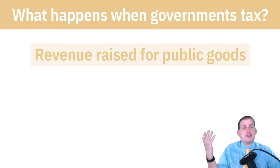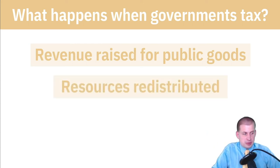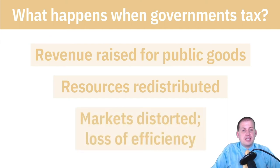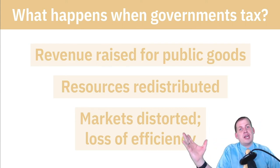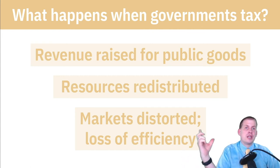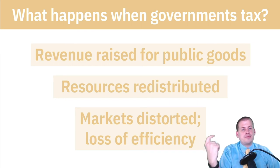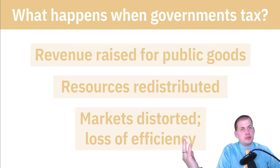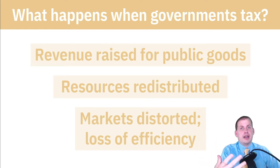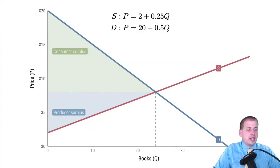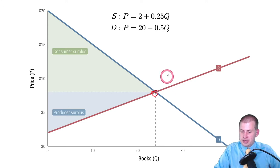When governments tax, they raise revenue for public goods and redistribute resources, but a side effect is distortion in a market — a loss of efficiency. This is the mathematical reason why free-market advocates argue government should not be involved in markets: it messes up the good deal points people can get and prices people out of markets. If somebody was willing to pay for a book but taxes make it more expensive, they can no longer access it.